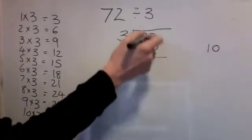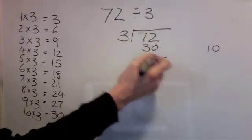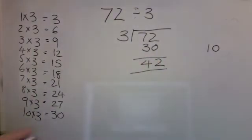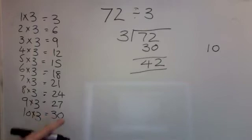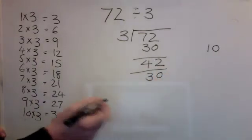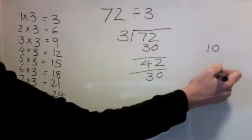Let's take the 30 away and see what's left. 2 take away nothing is nothing. 7 take away 3 is 4 — that's my new number. I'm looking for a number as close to 42 as possible without going over. Looking down the times table answers, the biggest number I've got is 30, so I'll use that. To make 30, I used 10 times 3. Little reminder over here.